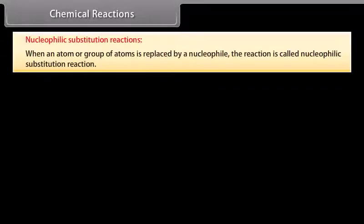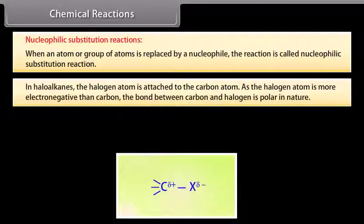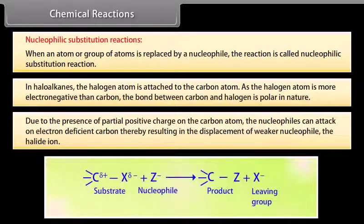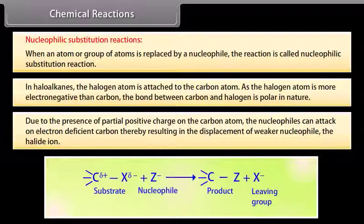When an atom or group of atoms is replaced by a nucleophile, the reaction is called nucleophilic substitution reaction. In haloalkanes, the halogen atom is attached to the carbon atom. As the halogen atom is more electronegative than carbon, the bond between carbon and halogen is polar in nature. Due to the presence of partial positive charge on the carbon atom, the nucleophiles can attack on electron-deficient carbon, thereby resulting in the displacement of weaker nucleophile, the halide ion.